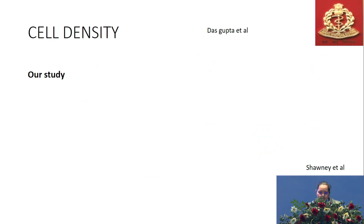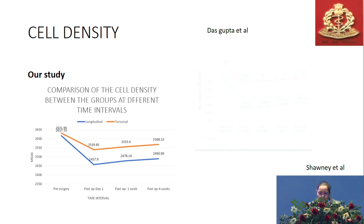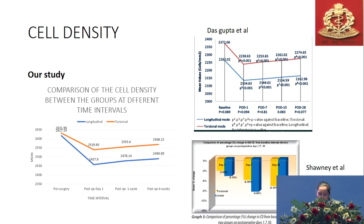When comparing cell density, our study showed maximum loss occurring on day one with minimal recovery over four weeks. This was in corroboration with both comparative studies. However, one difference noted was that in Shawnee et al., endothelial cell loss continued over the four-week period, whereas it appeared to stabilize in our study and in the Dasgupta et al. study.